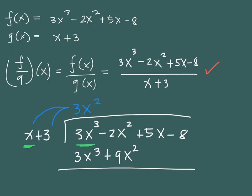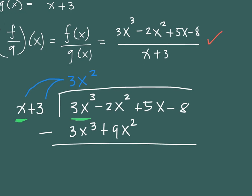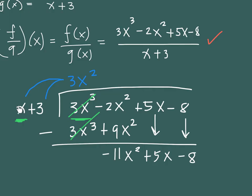After multiplying, we subtract the expression. 3x cubed and 3x cubed cancel. Negative 2x squared minus 9x squared gives negative 11x squared. Bring down the 5x and the minus 8, then repeat the process. We need to think of what to multiply by x to get negative 11x squared — that means we need negative 11x.